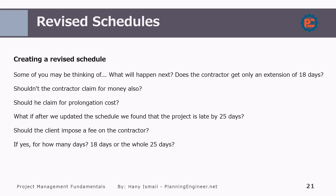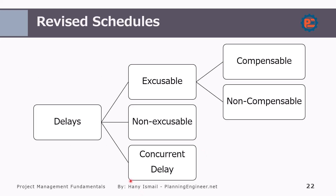The revised schedule is linked to claims. In order for you to create a good revised schedule, you should be aware of the claims concepts. According to this scenario, we got 18 days of impact, but the contractor was delayed 25 days. After we created the revised schedule and updated it, we find the contractor is 25 days delayed. What do we do — give the contractor 18 days, 25 days, or what? This gives me the opportunity to explain the types of delays. We have excusable delays, non-excusable delays, and concurrent delays.